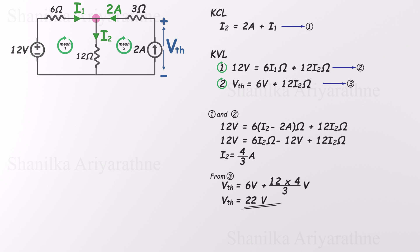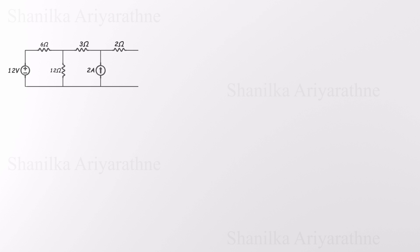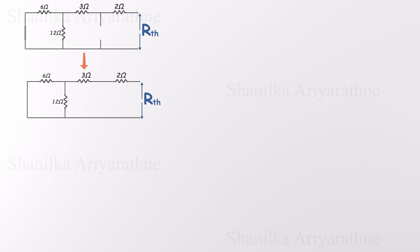Now to find RTH, the Thevenin resistance, we need to deactivate all the power sources in the circuit. That means short-circuit any voltage sources, just replace them with a wire, and open-circuit any current sources, remove them so the branch is left open. Once that's done, we can calculate the resistance across the open terminals, and that will give us the Thevenin resistance. So in our circuit, we've replaced the voltage source with a short and the current source with an open. Now we're ready to simplify the remaining resistor network and find RTH.